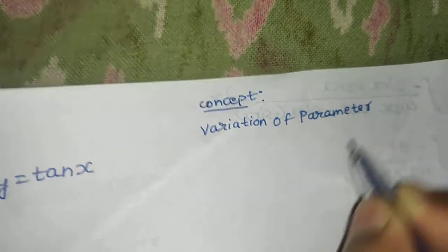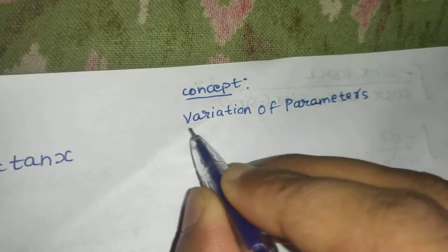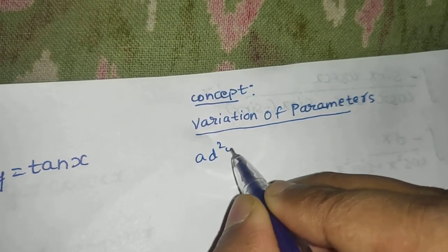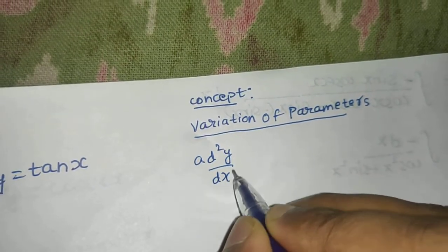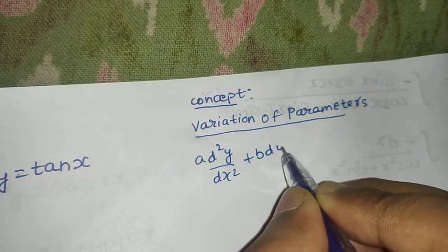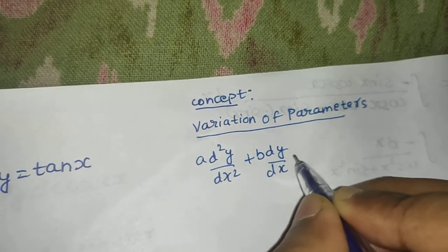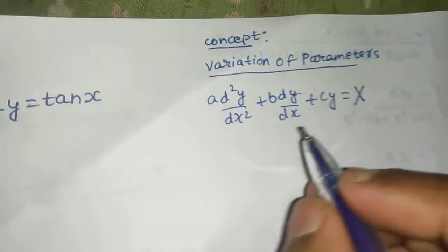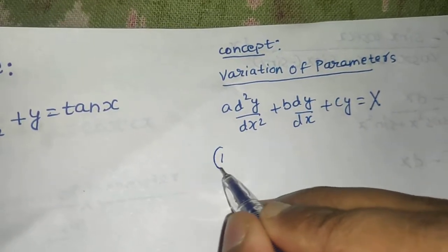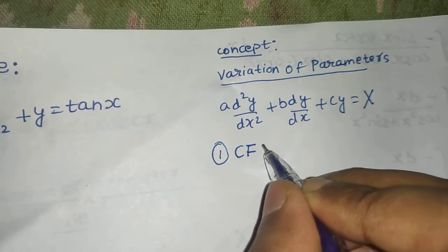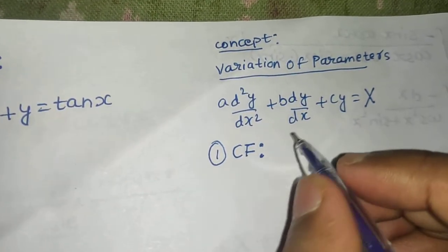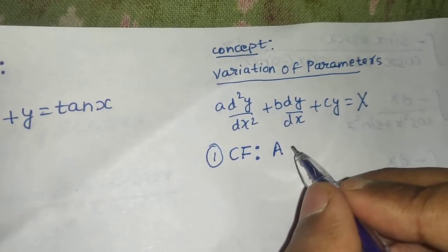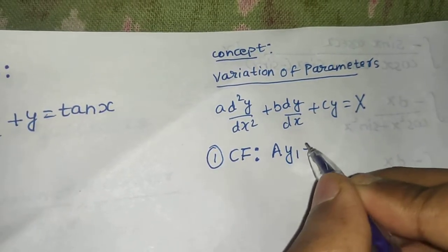The format of questions you will get will always be of this form: a(d²y/dx²) + b(dy/dx) + cy = X, where X is some function of x. The first step is to find the complementary function, which will be of the form a·y1 + b·y2.